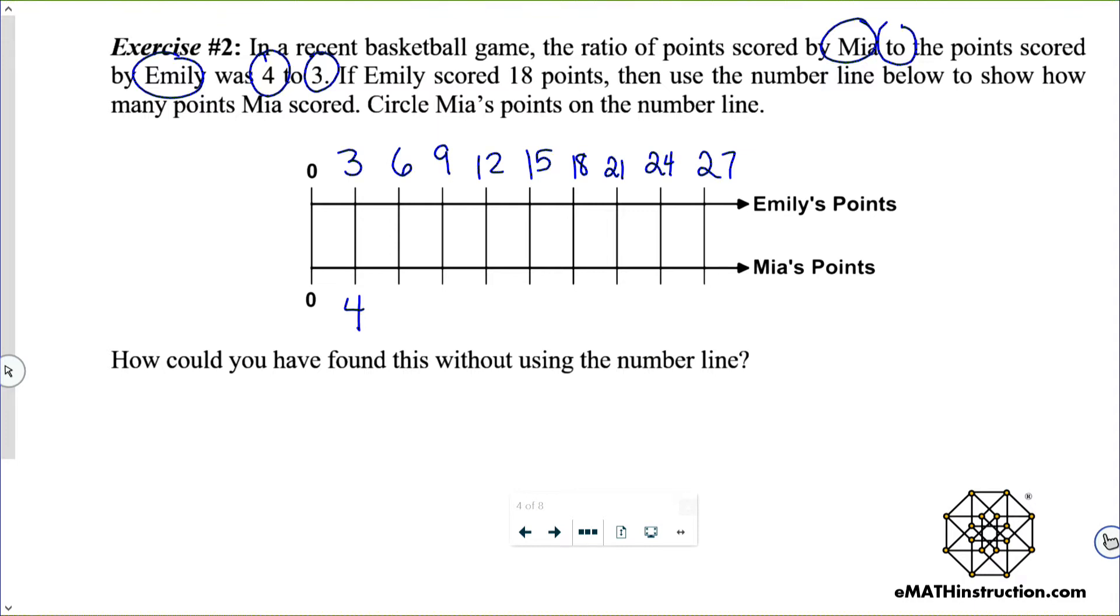Mia's is going to go by 4. So 4, 8, 12, 16, 20, 24, 28, 32, and 36.